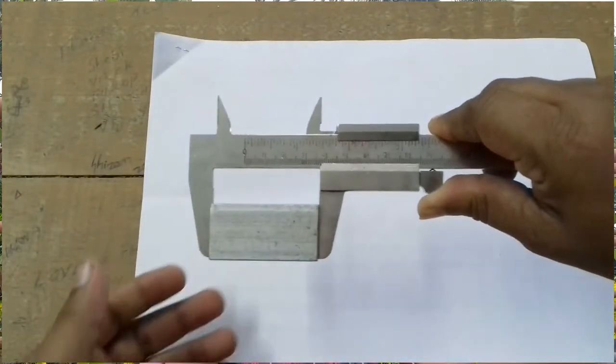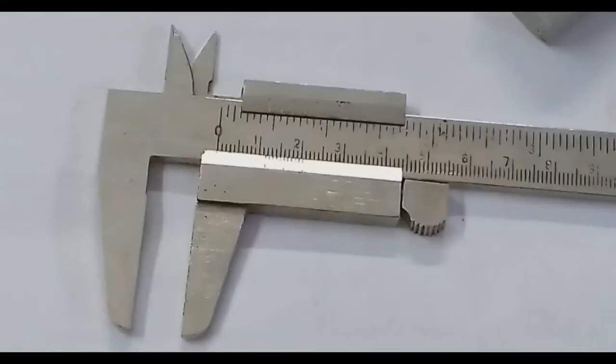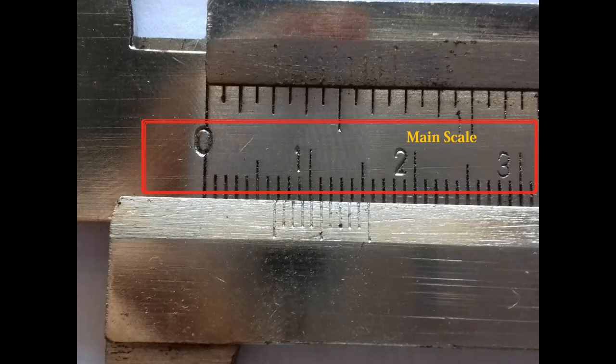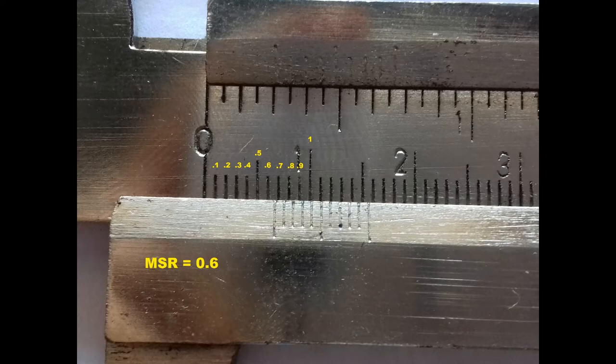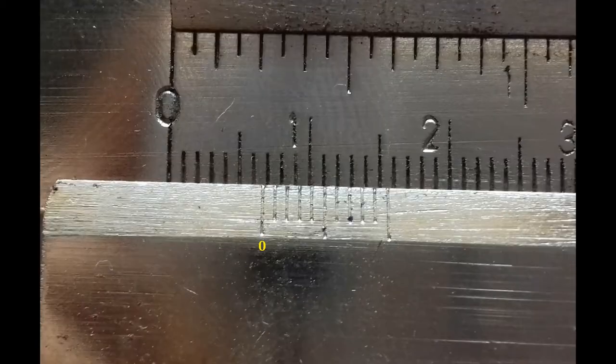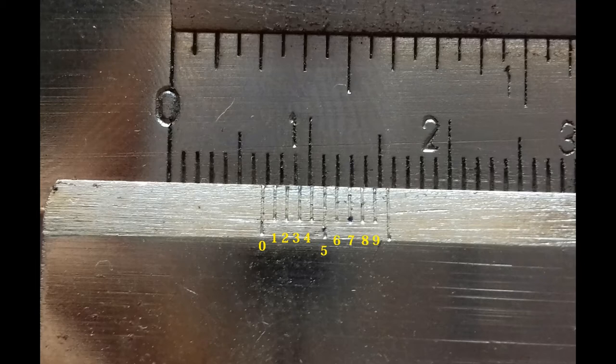This is the way a Vernier caliper is to be used. This lengthy scale is the main scale, which is marked in centimeters. Each centimeter is subdivided into 10 millimeters. Readings taken on the main scale are called MSR, which is main scale readings. Another scale in Vernier calipers is the Vernier scale. Vernier scale is a small scale which can be moved on the main scale.